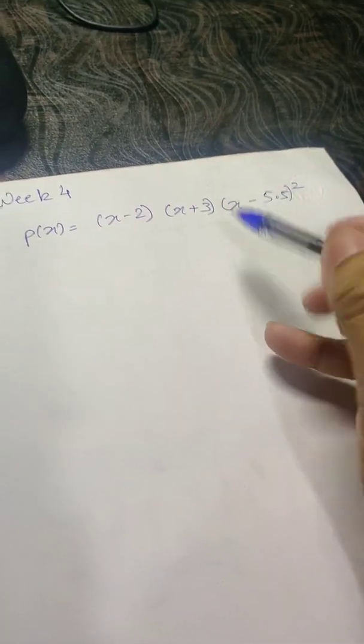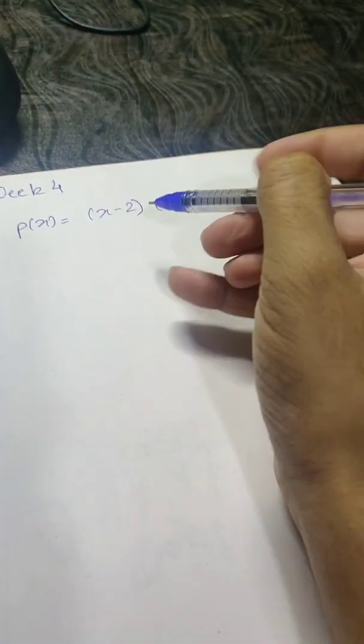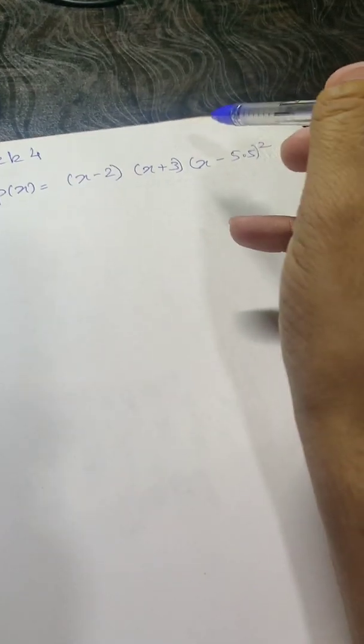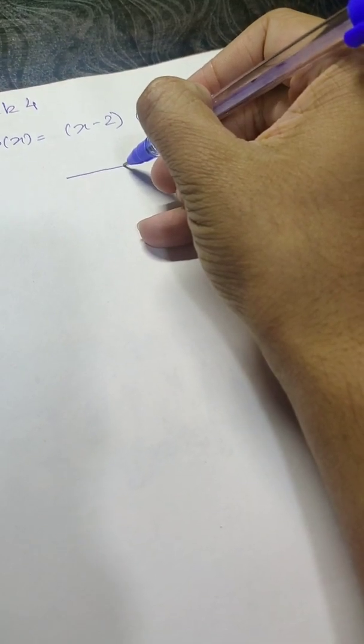Let's just go ahead. I will now draw an x axis of this particular polynomial. Here we have minus 3 corresponding to this factor, here we have 2, and here we have 5.5.